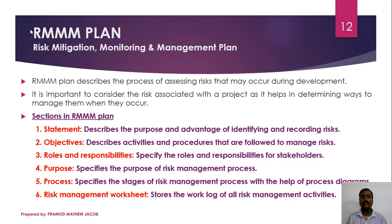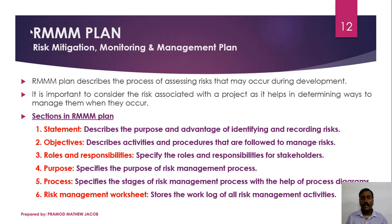The second section is the objective, which describes the activities, procedures, and strategies followed to manage the identified risks. The third section covers roles and responsibilities for each stakeholder - developer, tester, designer - associated with the project. The fourth is the purpose section, which specifies the purpose of the risk management process. The process section describes the risk management process stages with the help of process diagrams. The last section is the risk management worksheet, which stores the work log of all risk management activities done during the project. The ultimate use of the RMMM plan is that if we are doing a similar project in future, we can refer to it to identify what strategies were used previously to resolve a particular risk. Thank you.